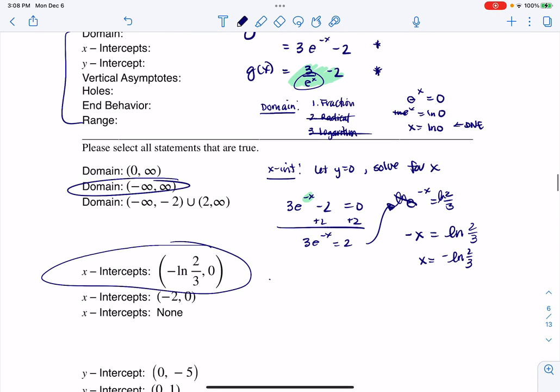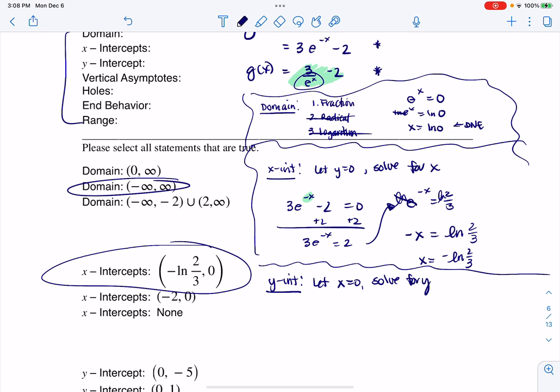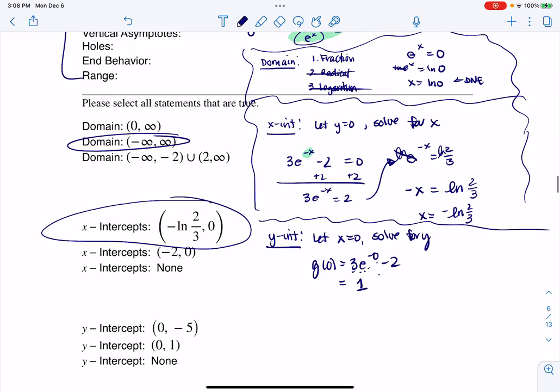The next thing is the y-intercept. Y-intercepts, in my opinion, tend to be easier to find than x-intercepts. You let x equal zero and solve for y. Let me just put a little bar here so we know which trait we are working on. So let's let x equals zero. If I want g(0) in this case, it would be 3e^0 - 2. Well, e^0 is 1, 3 times 1 is 3, 3 minus 2 is 1. So my ordered pair for my y-intercept is going to be (0, 1). And here it is.